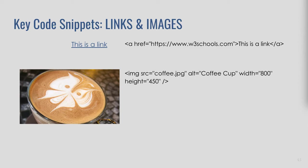The next key code snippet is how to get links and images to display on a website. On the left is what they look like; on the right is the code behind them. For a link, I've got 'This is a link' as a hyperlink — there's an opening anchor tag, a closing tag, and in the middle is the text that's displayed. The hyperlink destination is declared inside the anchor tag.